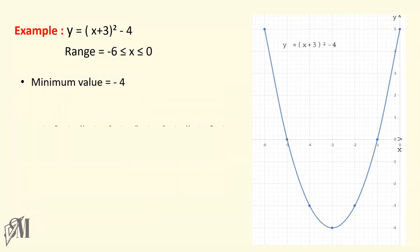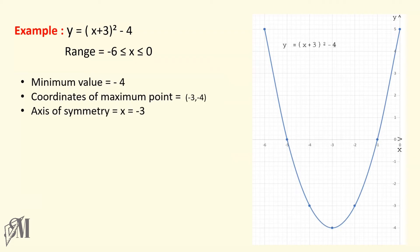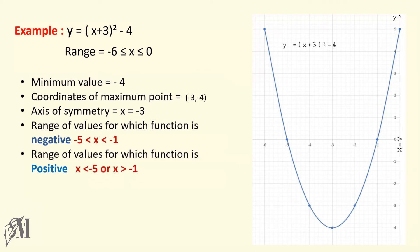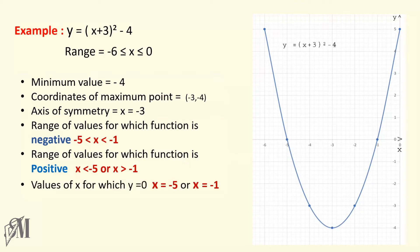The minimum value is minus 4 and the parabola turns at (minus 3, minus 4). The axis of symmetry is x equals minus 3. The function is negative when x lies between minus 5 and minus 1, and it becomes positive when x is less than minus 5 and when x is greater than minus 1. The roots are x equals minus 5 and x equals minus 1.